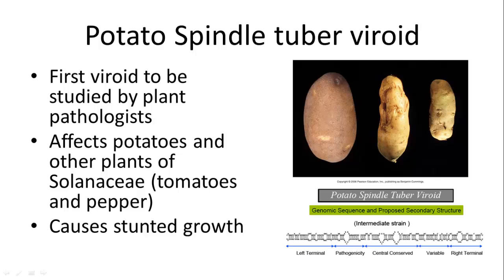The potato spindle tuber viroid causes stunted growth. Sometimes it doesn't do much depending on how prevalent the infection is, but here are three different stages. In the more advanced stage, the eyes of the potato are very visible because of constricted growth in the rest of the tuber. You can also see deformation of the potato.